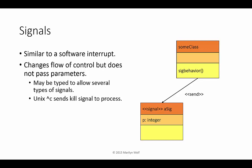A signal is a form of inter-process communication that is like an interrupt but performed in software. It changes the flow of control but usually doesn't pass parameters. The Control-C command in UNIX is an example of a signal that kills a process. Signals can also be represented in UML.